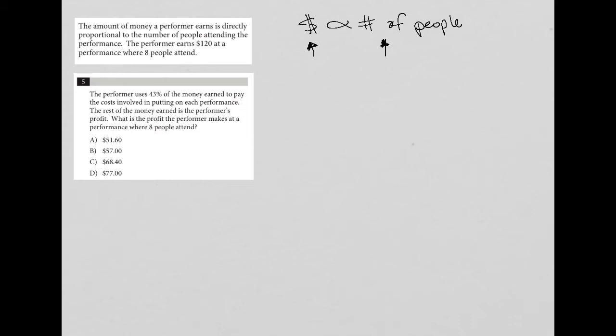It tells us that the performer earns $120, so that goes in this left column over here, for a performance where eight people attend. So eight goes in this column over here.